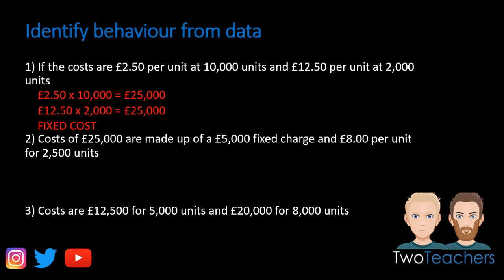For question 1, some calculations were required. £2.50 per unit × 10,000 units gives a total cost of £25,000. In the second part, the price per unit was £12.50 based on 2,000 units, and the total production cost is again £25,000. Because the total production cost is £25,000 regardless of whether we produce 10,000 or 2,000 items, this is a fixed cost.